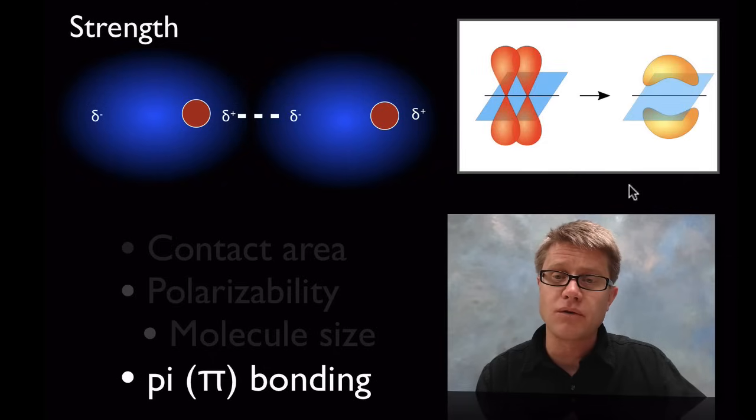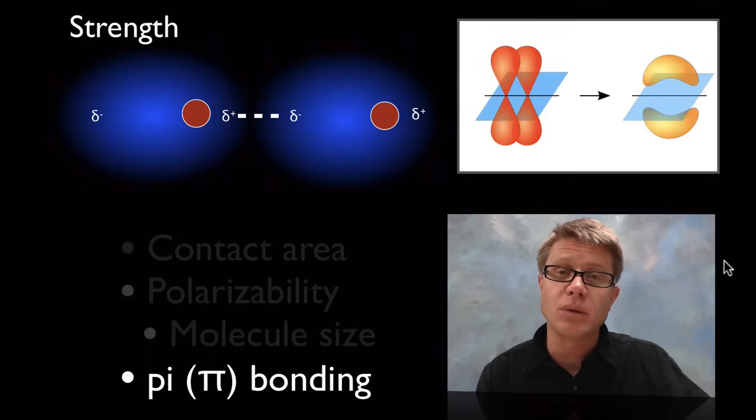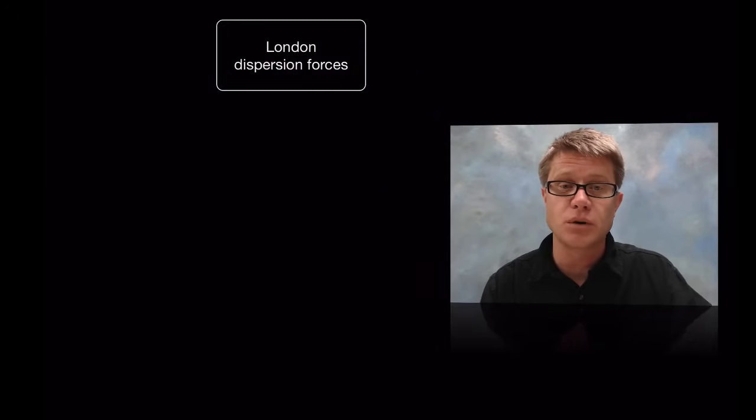And then finally pi bonding. That's we're going to have orbitals that overlap. It forms something called a pi bond. If we increase the number of pi bonds inside those molecules we're going to increase these London dispersion forces.